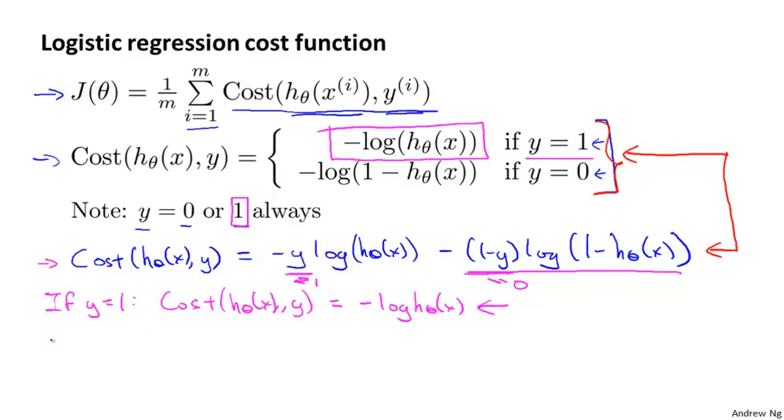The other case is if y is equal to 0. And if that's the case, then our writing of the cost function is saying that, well if y is equal to 0, then this term here would be equal to 0. Whereas 1 minus y, if y is equal to 0, would be equal to 1, because 1 minus y becomes 1 minus 0, which is just equal to 1.